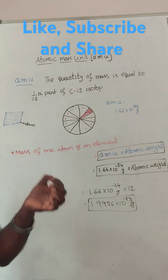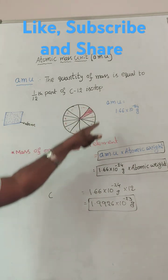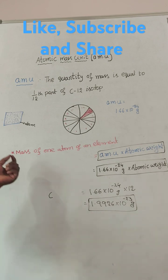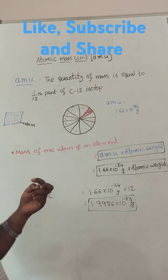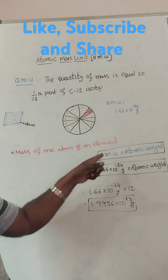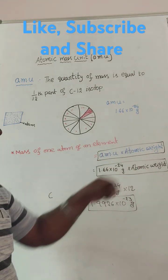Formula to calculate mass of one atom of an element: what we taken this atom from the element, the small atom, mass of one atom of an element is equals to AMU into atomic weight.